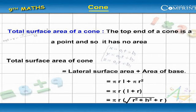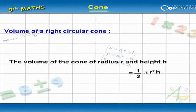The surface area of cone equal to lateral surface area plus area of base equal to pi r l plus pi r square equal to pi r into l plus r equal to pi r into root of r square plus h square plus r.